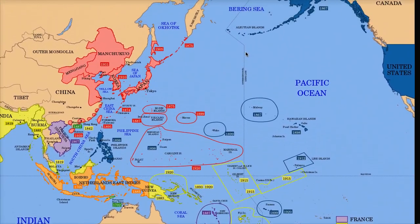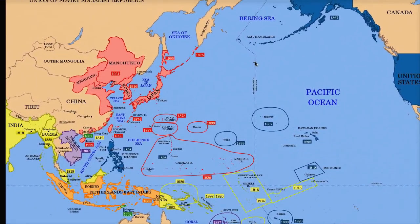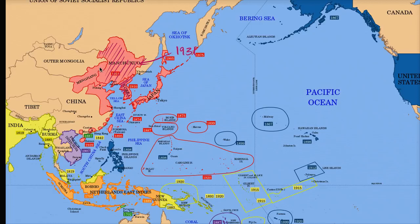If we go back to the early 1900s, Japan is becoming more and more militaristic and nationalistic. In the early 1900s, it had already occupied Korea as of 1910. And in 1931, it invades Manchuria — right over here — in 1931. It installs a puppet state called Manchukuo.